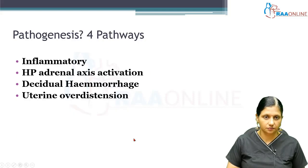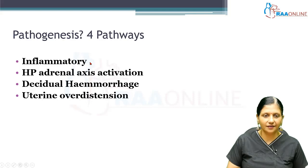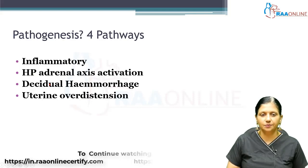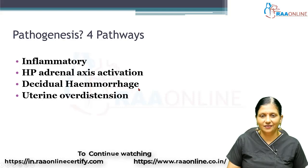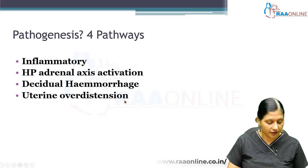There are four pathways by which preterm labor can develop: one is the inflammatory pathway, as seen in chorioamnionitis; another is activation of the hypothalamic-pituitary-adrenal axis; a third is decidual hemorrhage or bleeding in the intervillous sinuses or placental separation; and the fourth is uterine over-distension.